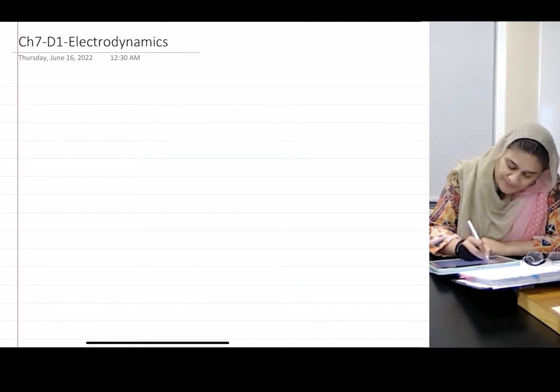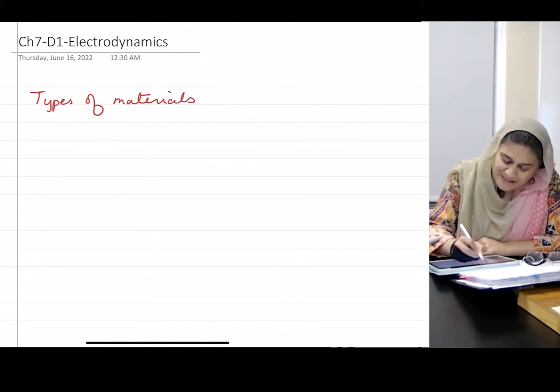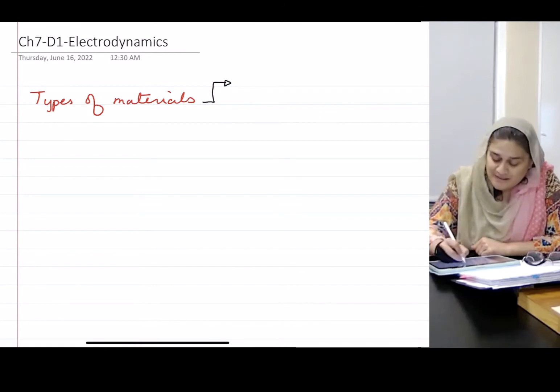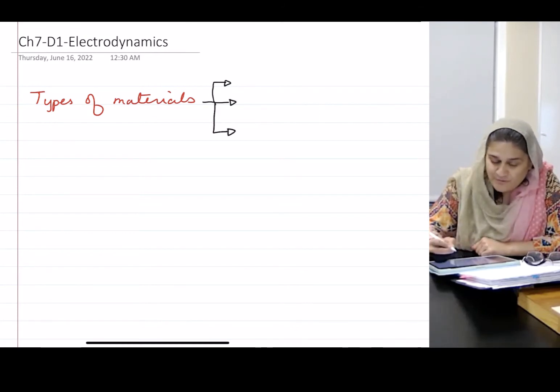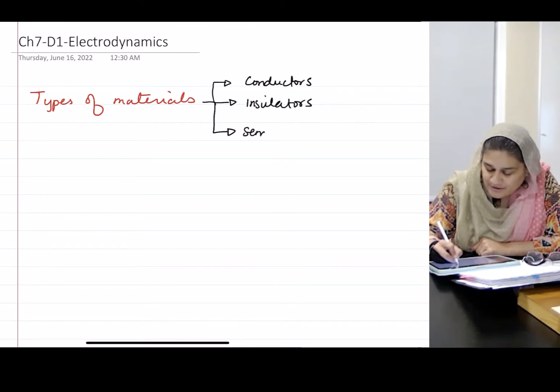So first things first. Types of materials. How many different types of materials are there when we're talking about electricity and magnetism? We can basically divide them into three categories: conductors, insulators, and semiconductors.